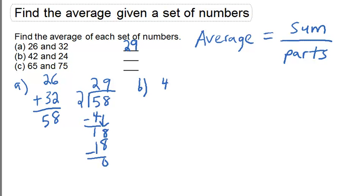For example b, the sum of 42 and 24 is 66. Again there are two parts, so when we divide 66 by 2, we get an average of 33.